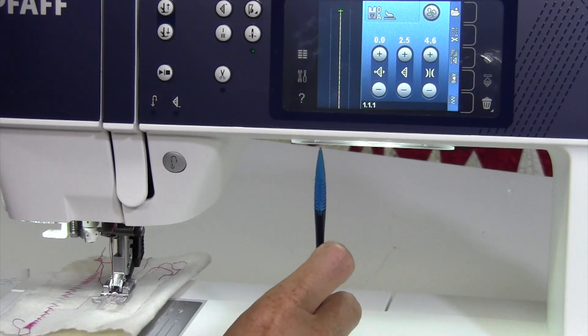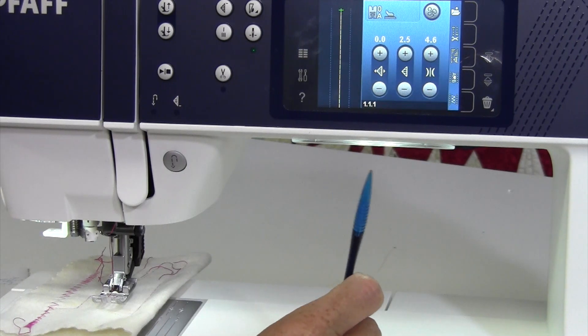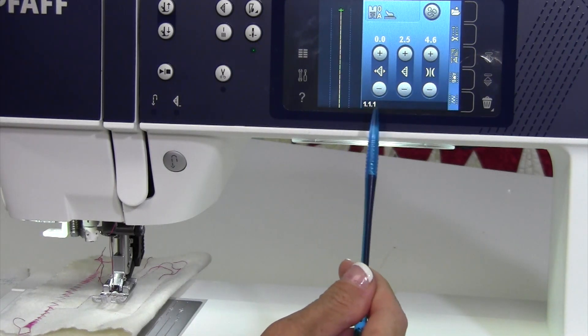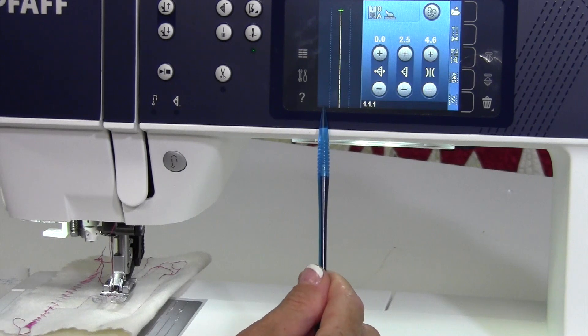On the Pfaff Performance 5.2, there are 37 needle positions for the straight stitch. That might sound a little excessive.